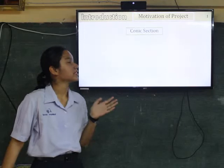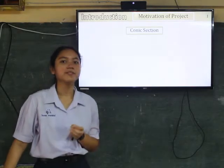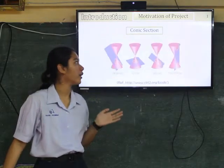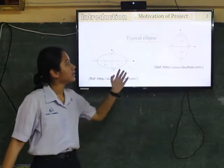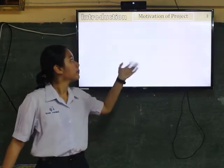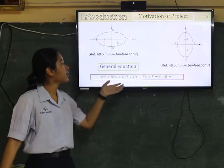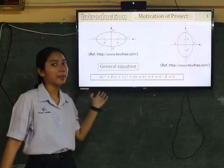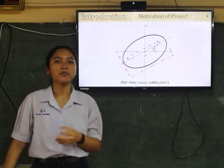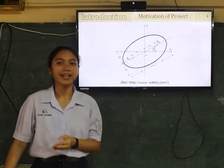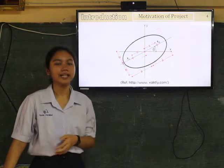My motivation of this project came from studying coordinate sections about Oblique Ellipse in grade 10. Then I studied only the ellipse like this. The ellipse has the general form, this equation Ax plus By equals zero. So I wanted to know about another form of ellipse, then I decided to study about Oblique Ellipse.